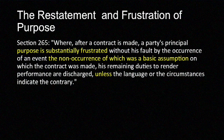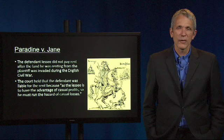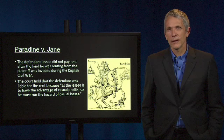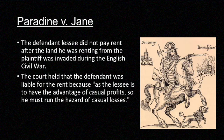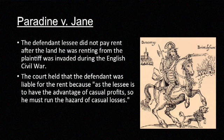In another famous but much older English case, the court treated frustration of purpose very differently. In Paradine v. Jane, decided in 1647, the defendant rented land from the plaintiff. However, Prince Rupert of Germany invaded and took the land for three years during the English Civil War, and the defendant did not pay rent during that time. The plaintiff sued for the rent owed, but the defendant claimed he owed nothing because the invasion had frustrated his purpose in renting the land, which was possession. The court held that the defendant was not excused from paying the rent.